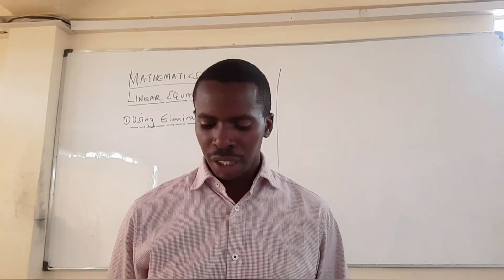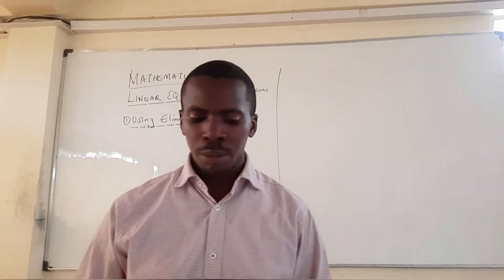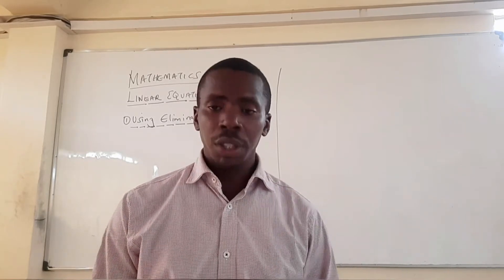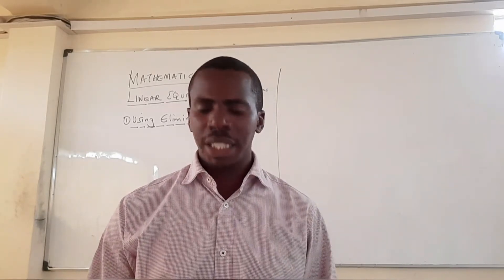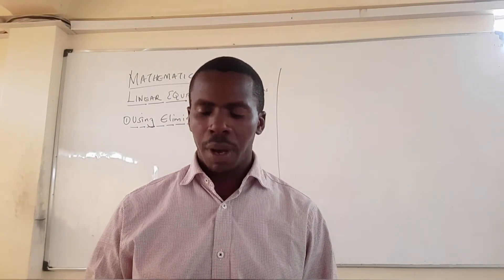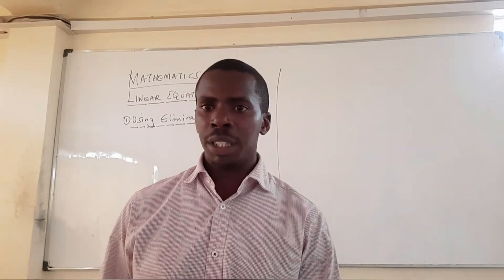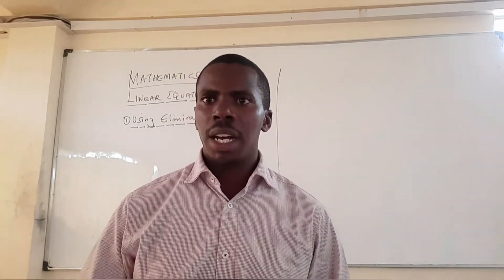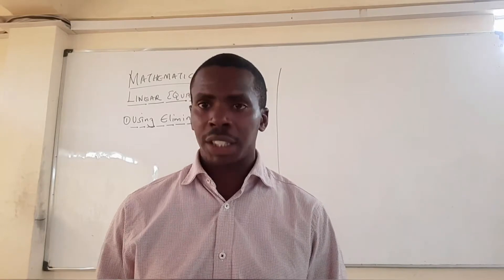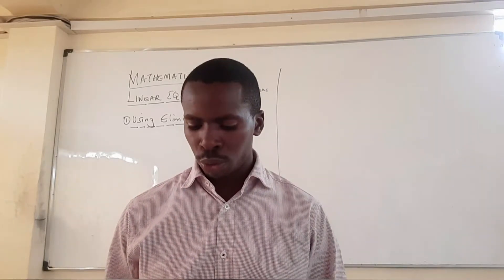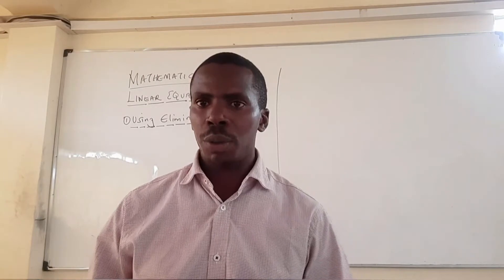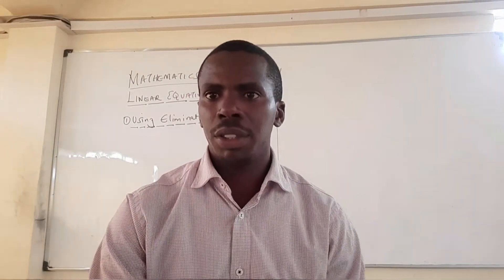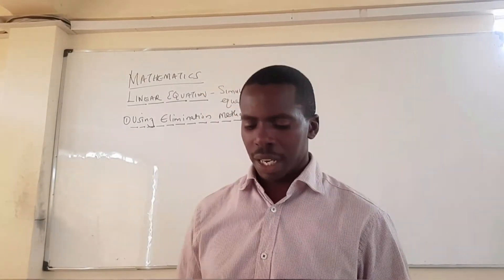I'd like to start with the elimination method. Let's see how we go about solving simultaneous equations using the elimination method. What you're going to be doing is getting rid of one unknown — that's why we're talking about eliminating, or the elimination method. Let me have a first example to show you how to go about it.